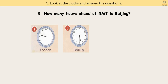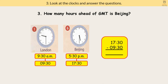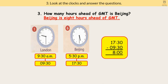Question 3: How many hours ahead of GMT is Beijing? We know that Beijing is ahead of GMT. When it is 9:30 a.m. in London, the time in Beijing is 5:30 p.m. To calculate the hours, we minus 5:30 p.m. from 9:30 a.m. To make it easier, convert to 24-hour clock format: 9:30 a.m. becomes 9:30, and 5:30 p.m. becomes 17:30. So 17:30 minus 9:30 equals 8 hours. Beijing is 8 hours ahead of GMT.